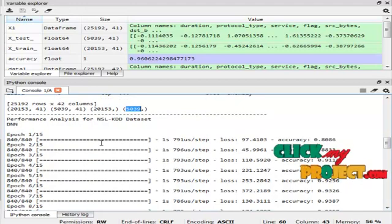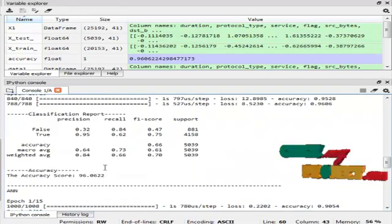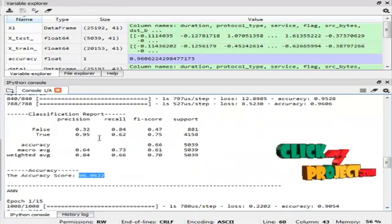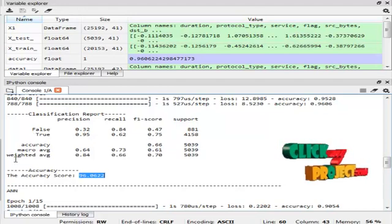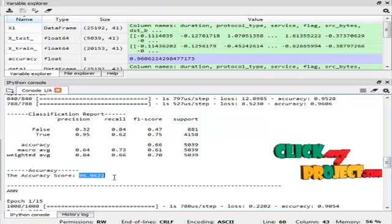Deep Neural Network Algorithm accuracy is 96%. And the classification report of precision, recall, and F1 score of false data is 0.3, 0.84, 0.47. And true values is 0.93, 0.62, 0.75. These are the macro average values and weighted average values.